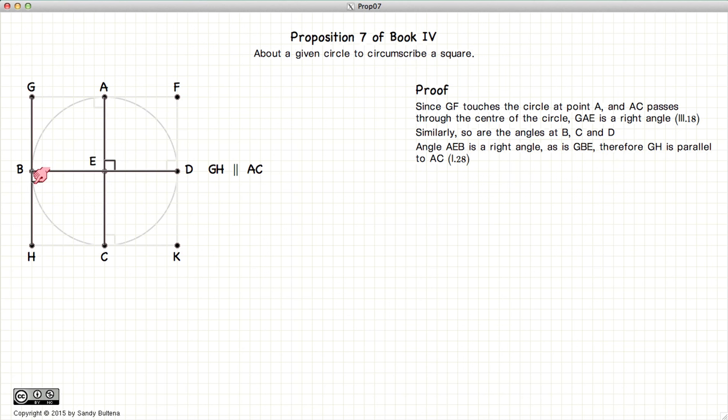Since they have opposite angles are equal, these two lines are parallel. So GH and AC are parallel. And using the same arguments we can show that FK is parallel to AC. Or in other words, these three lines are mutually parallel, so GH is equal to FK.